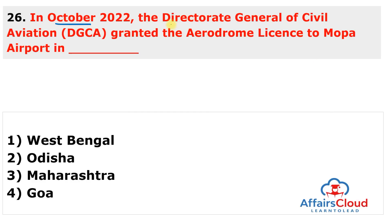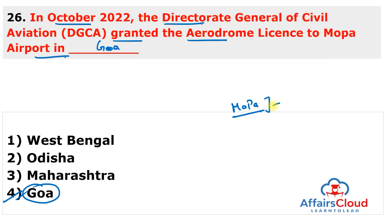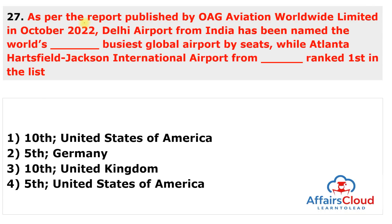Next question: in October 2022, the DGCA granted an aerodrome license to Mopa Airport situated in which state? The answer is Goa. The Director General of Civil Aviation granted an aerodrome license to Mopa Airport in Goa to commence flight operations. Goa is the first Indian city or state to have two airports that will soon see regular commercial flights. Earlier, one aerodrome license was given to Odisha's Jaipur Airport.